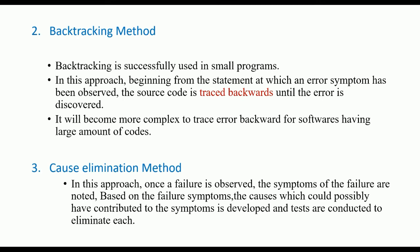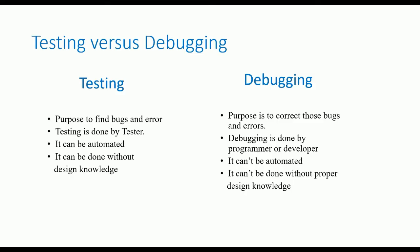Let's see the difference between debugging and testing. The purpose of testing is to find bugs and errors, while the purpose of debugging is to correct those bugs and errors. Testing is done by the software tester, while debugging is done by the programmer or developer. Testing can be automated or manual, but debugging is compulsory manual — it cannot be automated.